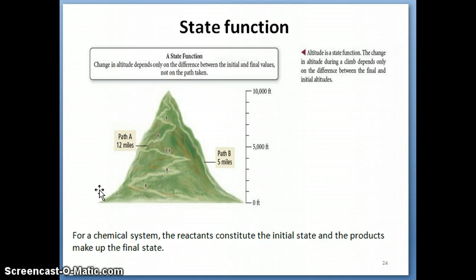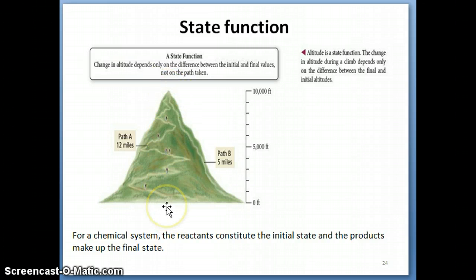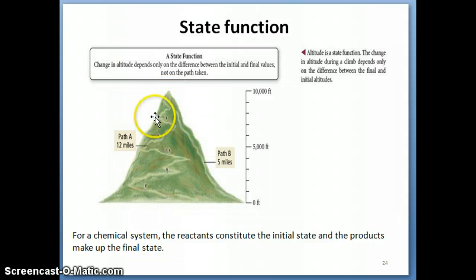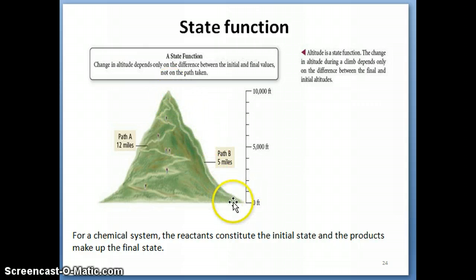If you look at this example, you can look at two different things. One is the altitude, which is basically the difference in height that the person would have when at the top of the mountain versus when at the bottom. If you look at the altitude when he's at the top, his altitude is always going to be 10,000 feet regardless of whether he goes through the direct path or the scenic route. The altitude is not affected by the path that this person takes.